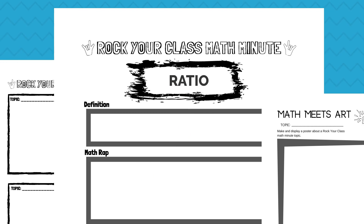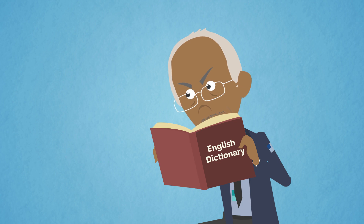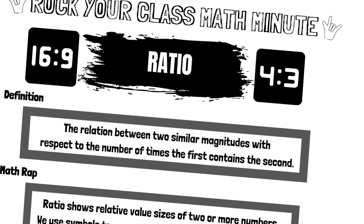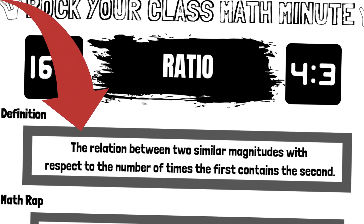Ratio. What does the dictionary say? The relation between two similar magnitudes with respect to the number of times the first contains the second.